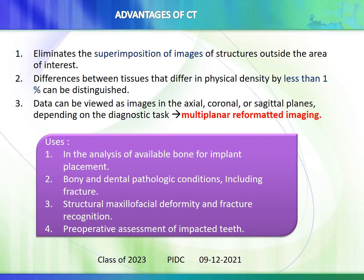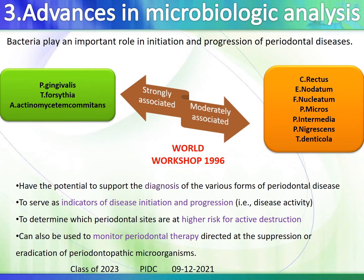Advantages of CT include elimination of superimposition of structures outside the area of interest, ability to distinguish tissues differing in physical density by less than 1%, and multi-planar reformatted imaging in axial, coronal, or sagittal planes. Main uses of CT include analyzing available bone for implant placement, bony or dental pathological conditions such as fractures, maxillofacial deformity, fracture recognition, and pre-operative assessment of impacted teeth.